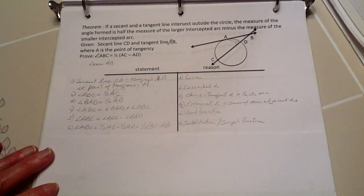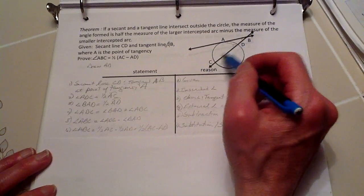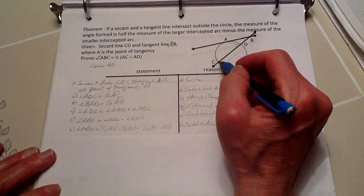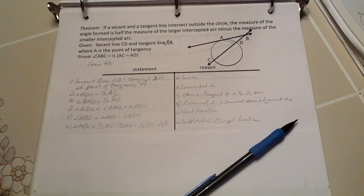then I have now just proven that this angle ABC is going to equal one-half this arc minus one-half of that arc. And we have concluded the theorem.